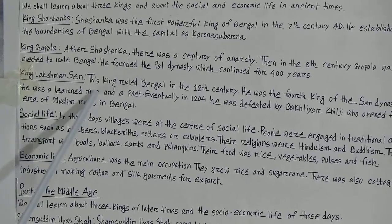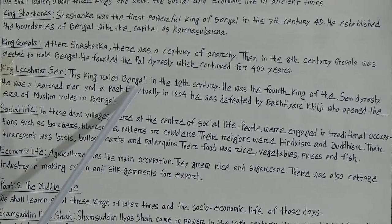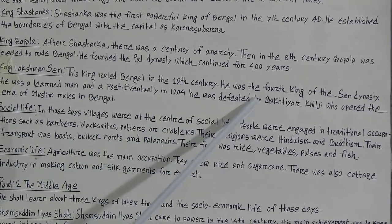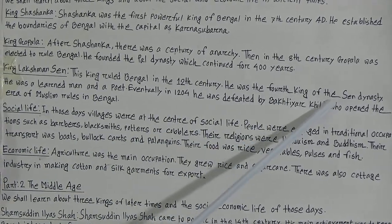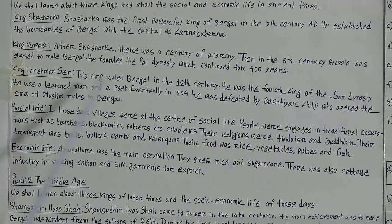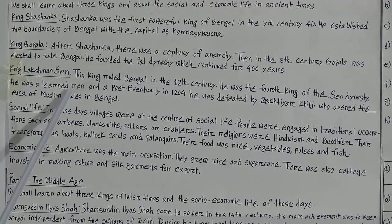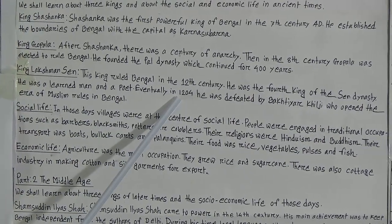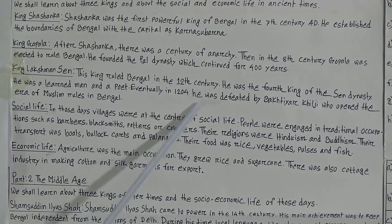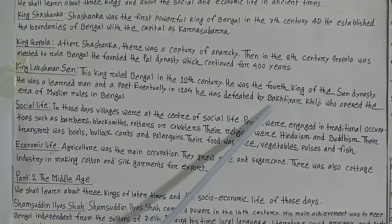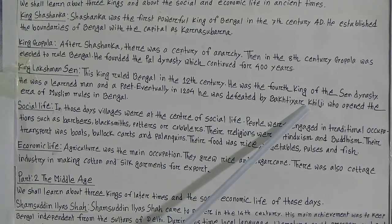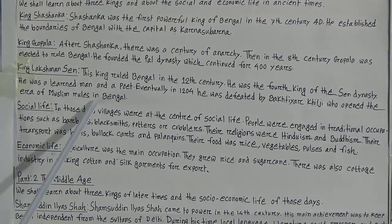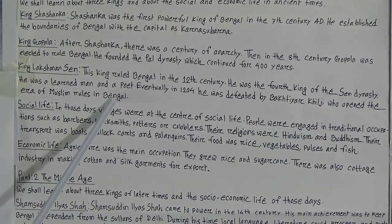King Lakshman Sen ruled Bengal in the 12th century. He was the fourth king of the Sen dynasty. He was a learned man and a poet. Eventually, in 1204, he was defeated by Bakhtiyar Khilji, who opened the era of Muslim rule in Bengal.